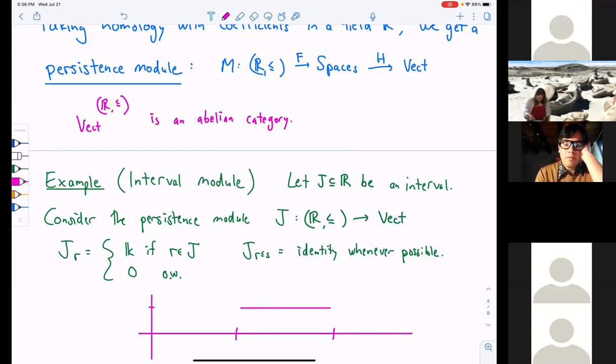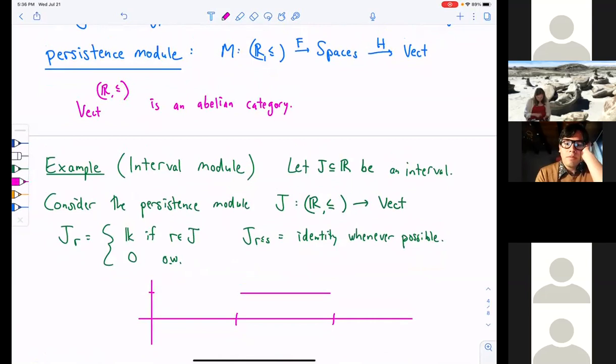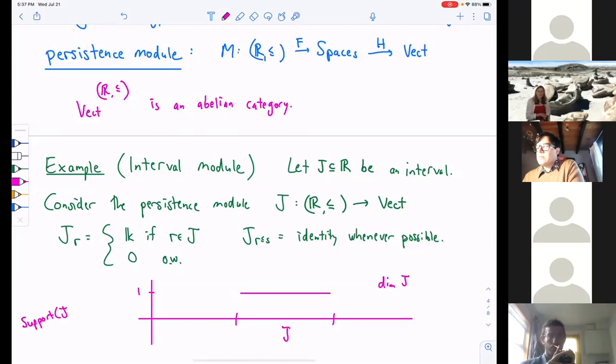So, it turns out that the indecomposable summands, in many cases, are these interval modules. So, let me describe those to you. If we fix an interval in the real numbers, there's a corresponding, at most, one-dimensional persistence module, which, for each of the points in the interval, just has the one-dimensional vector space. And for each of the points outside of that interval, is equal to zero. And the internal maps of the persistence module within the interval are the identity maps. So, here, I've kind of sketched a picture of what this looks like. If we take the interval j here, and we plot the dimension, point-wise dimension of j, then within the interval, we have a dimension of one. Outside of that interval, we have a dimension of zero. So, we see that the support of the interval module j is exactly the interval j.